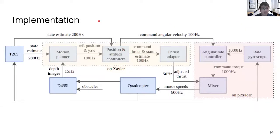This block diagram shows the implementation of the code. The motion planner, position and attitude controllers, and thrust adapter run on the Xavier. The motion planner takes in depth images from the depth camera at a frequency of 15 hertz. The Xavier is connected via a UART link, and the desired thrust and angular velocity commands are sent from the Xavier to the Pixracer via the UART link.